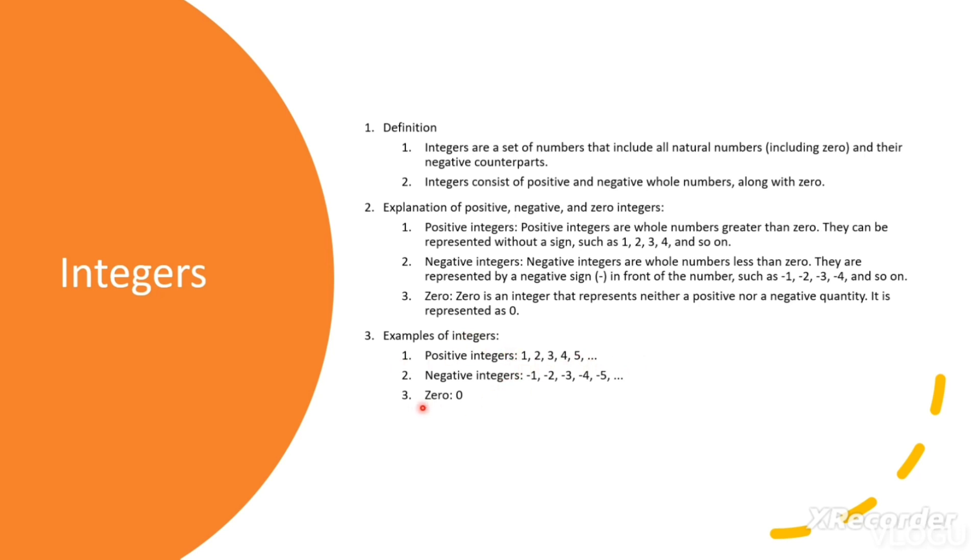Examples of integers. Positive integers: 1, 2, 3, etc. Negative integers: minus 1, minus 2, minus 3, minus 4, minus 5, etc.